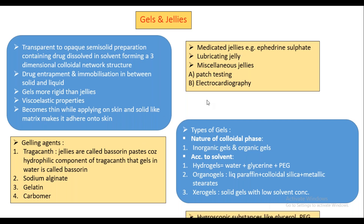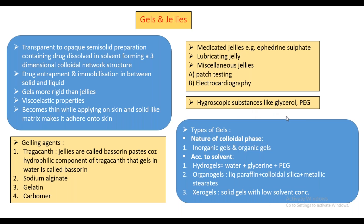Examples of your hygroscopic substances include glycerol and polyethylene glycol. From this entire slide, what we need to remember is: examples of hygroscopic substances, examples of different gelling agents, how to classify gels according to solvent, and the viscoelastic properties — gels are more viscoelastic than jellies. Nothing else is required.